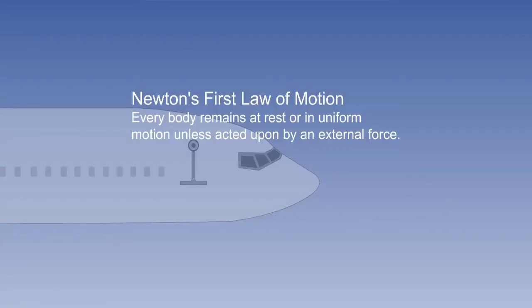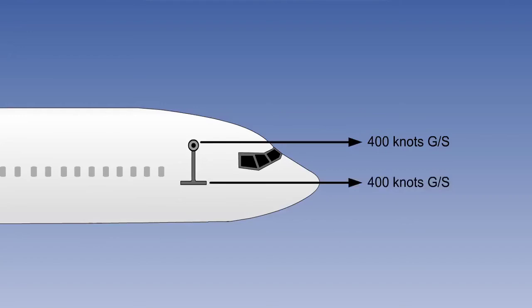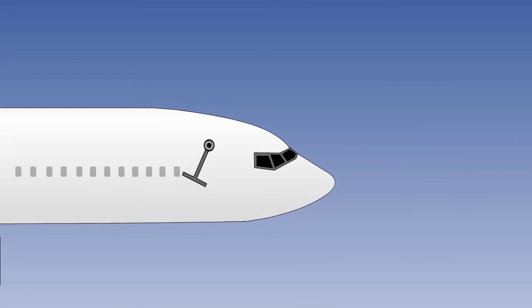The weight at the bottom of the pendulum is obeying Newton's first law of motion. Every body remains at rest or in uniform motion unless acted upon by an external force. Suppose that the weight and the aircraft are both travelling at 400 knots. Now the aircraft accelerates to 410 knots, but the pendulum weight, at least initially, remains at 400 knots. It appears to us that the weight is swinging backwards, but in fact the weight is maintaining uniform motion. The aircraft is accelerating ahead of it.